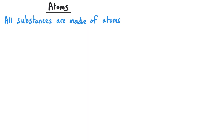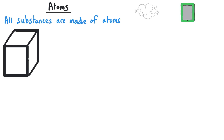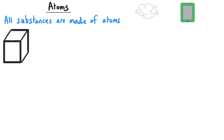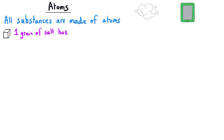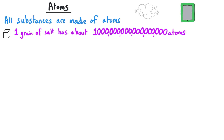Atoms are the building blocks for everything around us, from the air that we breathe to the screen that you're watching this from. Atoms are also mind-bogglingly small. In one grain of table salt, there could be as many as one million million million atoms — that's a one with 18 zeros after it.